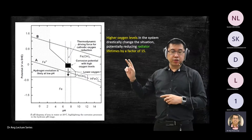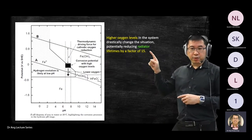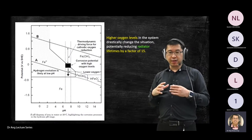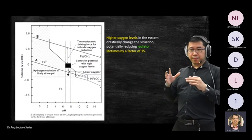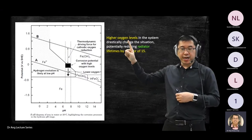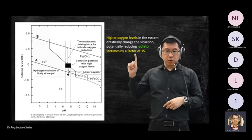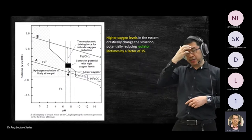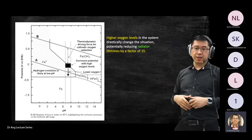This slide is about the oxygen level. There has been a study: if you are using a radiator with very high oxygen in the system, the lifetime will reduce by a factor of 1.5. You don't need to memorize the number, but highlight the effect: if you increase the oxygen level in the system, corrosion increases.